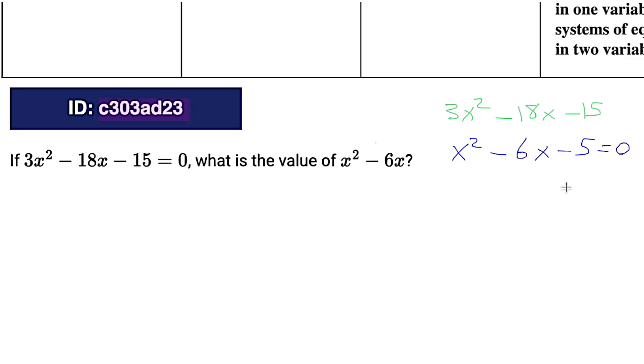We need x squared minus 6x, right? But we have x squared minus 6x minus 5. Well, that's easy enough. We've got to get rid of that 5, so let's add 5 to both sides, and we get x squared minus 6x equals 5. And by golly, that's what they wanted to know. So that's our answer.